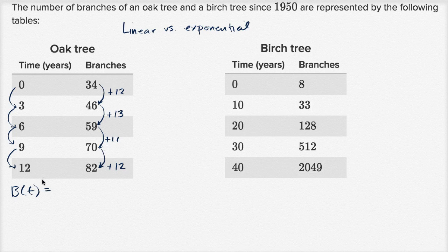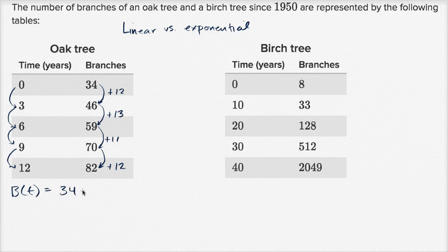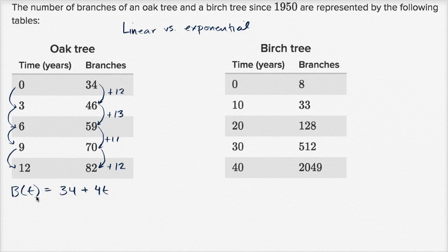So the number of branches we have, we're going to start at 34 branches, and then if we have 12 branches every three years, that's four branches every year. B(t) = 34 + 4t. And you could test this out. B(0) is going to give us 34 branches.